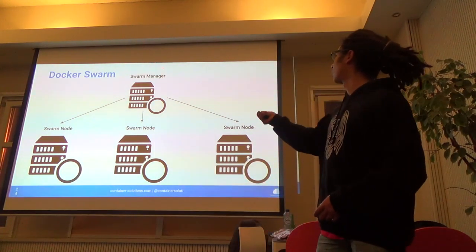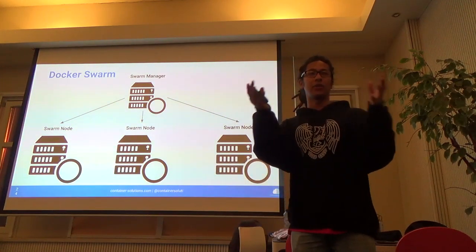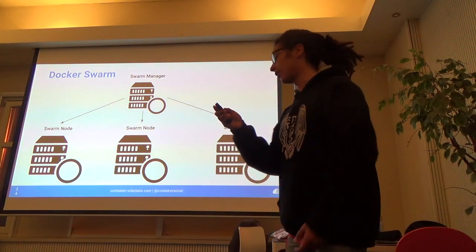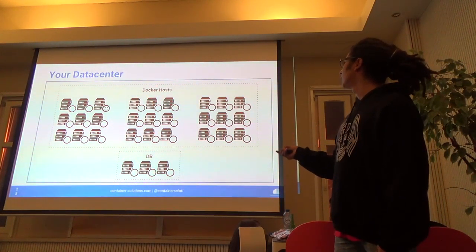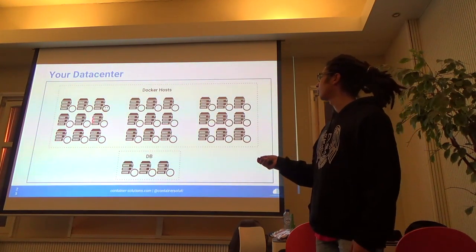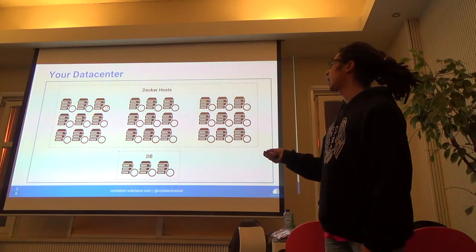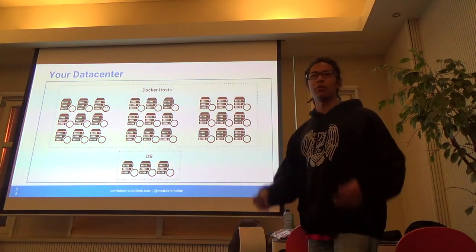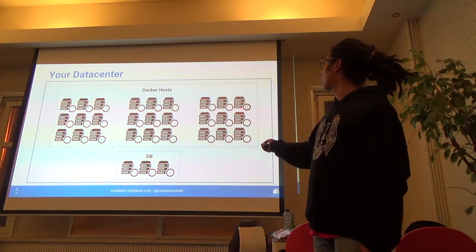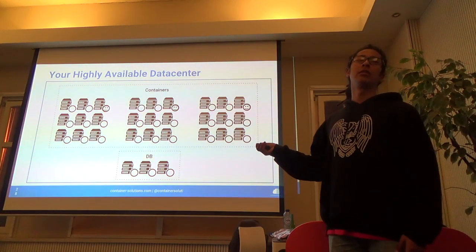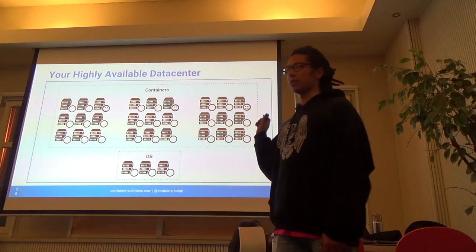You talk to the Swarm manager and say 'docker run microservice,' and the manager picks a node and asks it to run the container. Your data center is a pool of Docker hosts. The Swarm manager is the entry point, and all the other nodes report to it. Swarm will decide which node runs your container — it doesn't have to be one specific node; ideally it could be all three if you want high availability. Swarm can't always guarantee full high availability, but we'll get back to that.